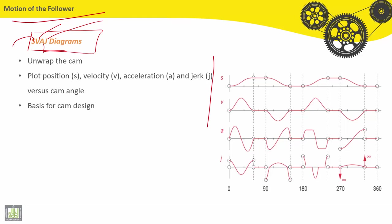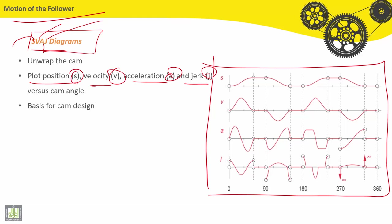This is an example of an SVAJ diagram. It plots position, velocity, acceleration, and jerk versus cam angle. This is the basis of cam design.